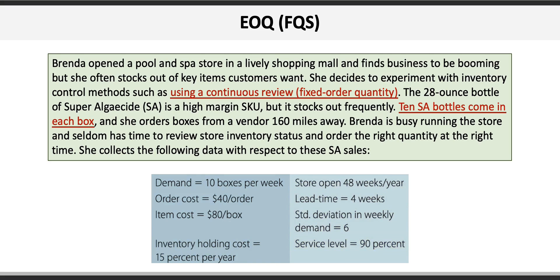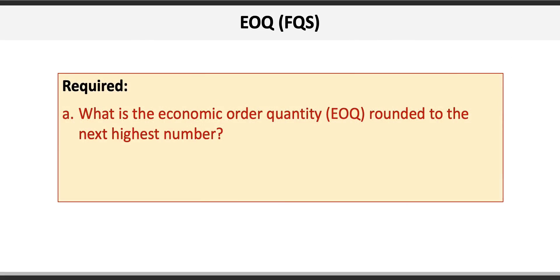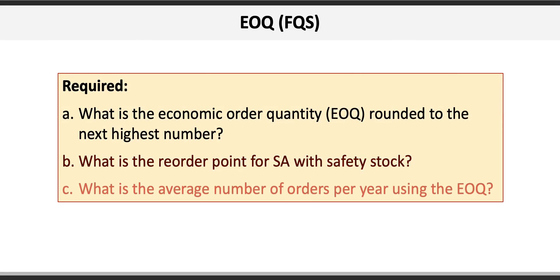There are three requirements for this problem. Requirement A asks us to calculate the EOQ. Requirement B asks for the reorder point with safety stock. And requirement C asks for the average number of orders per year using the EOQ calculated in requirement A.